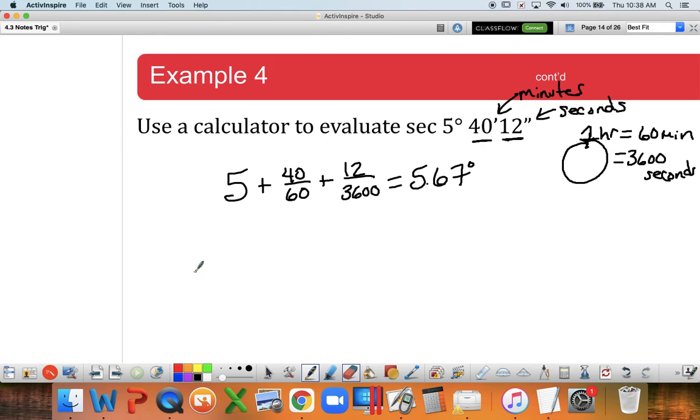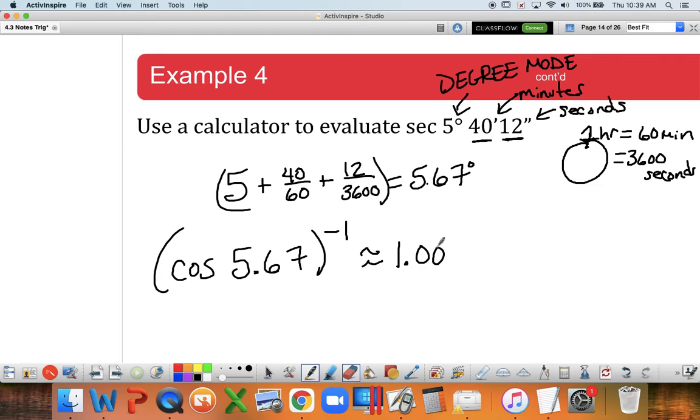We want to calculate the secant of that. To do secant on our calculator, we don't have a secant button. We have to use cosine. Here's how you type it in. You're going to put a parenthesis first, type in the cosine, we already know it's 5.67, and then I want to do to the negative 1, which is the x to the negative 1 button. It's the button right below the math button. You want to make sure everything we've been talking about so far is degrees. Make sure your calculator is in degree mode. If the question has degrees in it, you have to be in degree mode. When you do that, you should get about 1.005. Please let me know if you have any questions with that on the calculator.